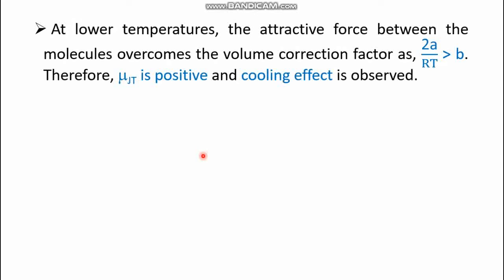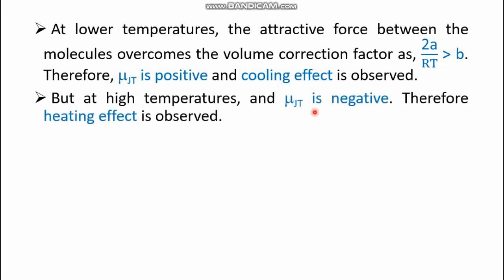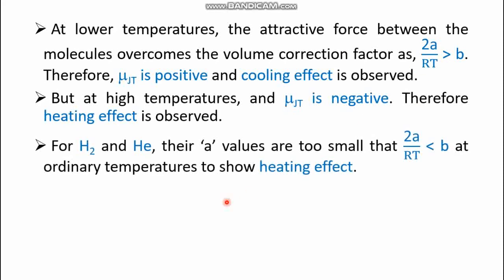At lower temperatures, the attractive force between gas molecules overcomes the volume correction factor — that is, 2a/RT > b — making μ_JT positive, so a cooling effect occurs. At high temperatures, 2a/RT < b, μ_JT is negative, and a heating effect takes place. For hydrogen and helium, the van der Waals constant a is very small, so 2a/RT is always less than b, resulting in a negative μ_JT — meaning heating effect is always observed for these gases.